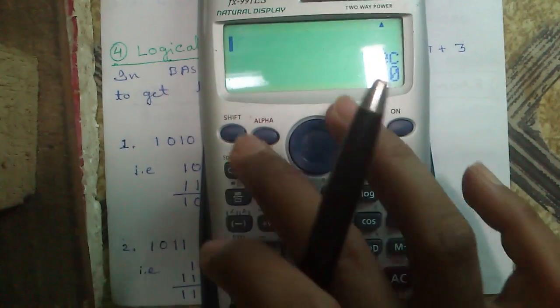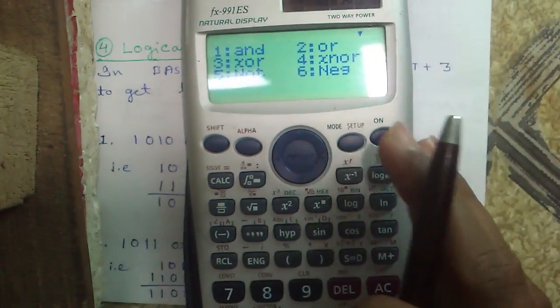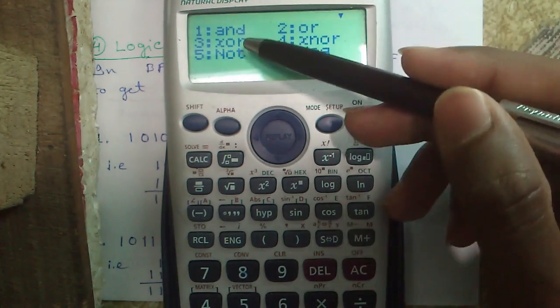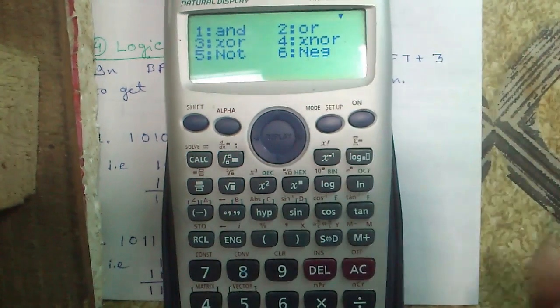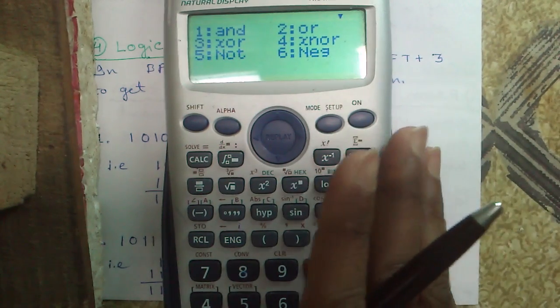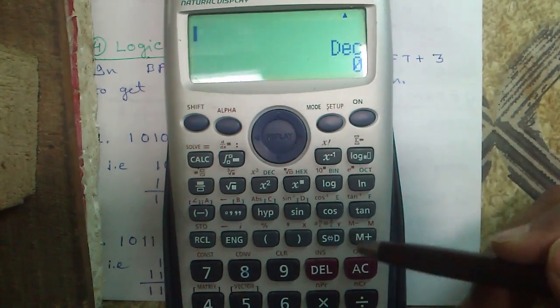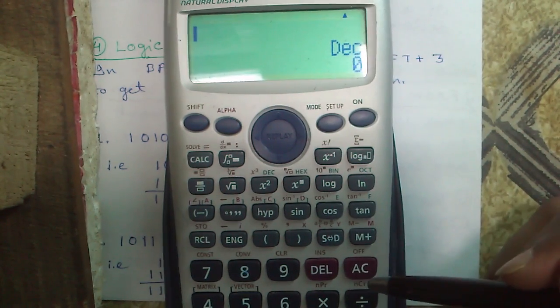To get the logical operators, press shift and 3. Six operators are there: AND, OR, XOR, XNOR, NOT and negative. How to use this? I will tell you and the meaning of those. One more thing, before doing any calculations using logical operators, don't forget to press AC each time.